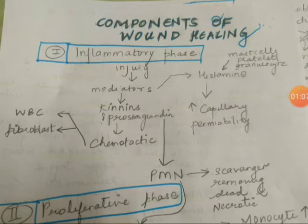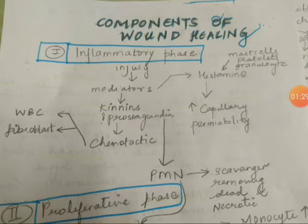Kinins and prostaglandins are also released by the PMNs — polymorphonuclear cells. What happens in this phase is that PMNs act as scavengers, removing dead and necrotic tissue. So in this phase we have mediator release and PMN activity.